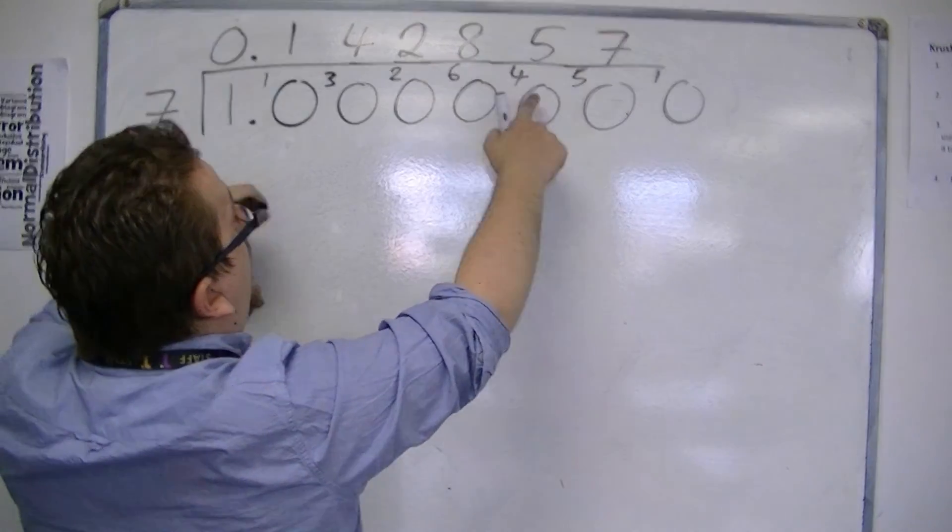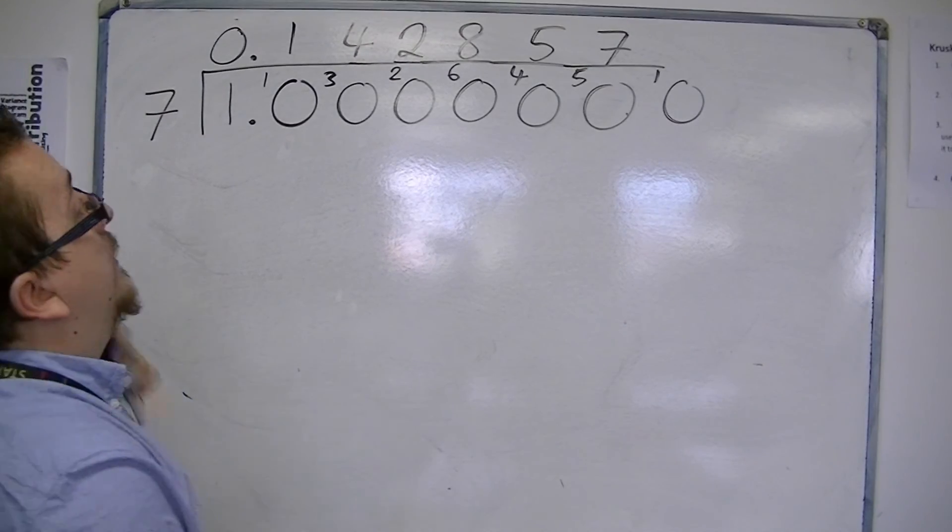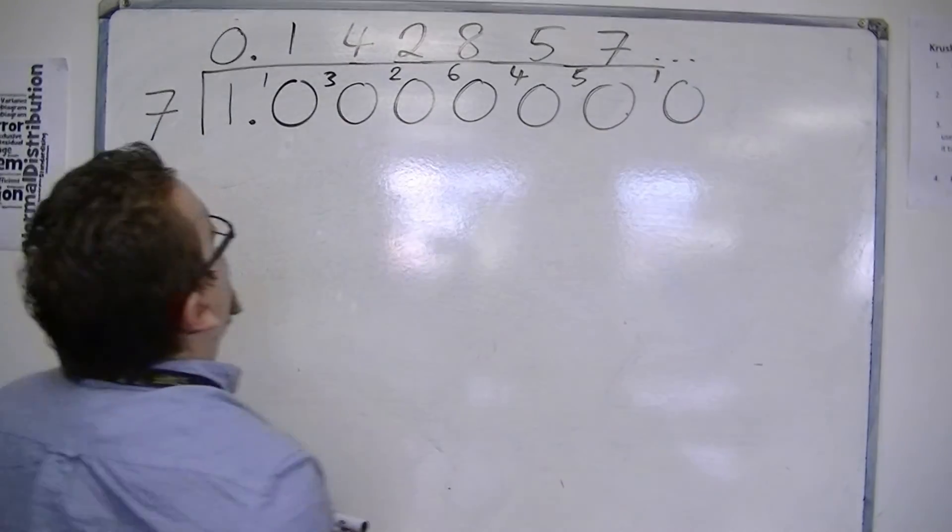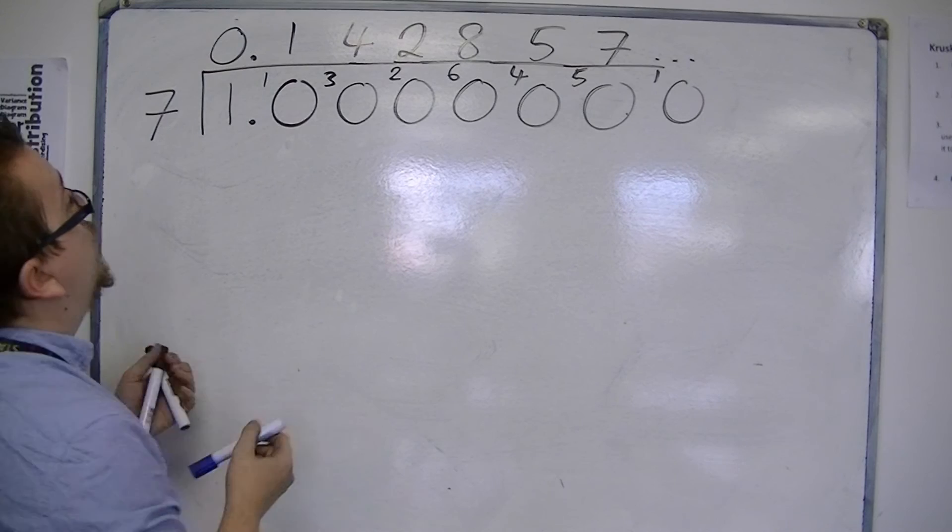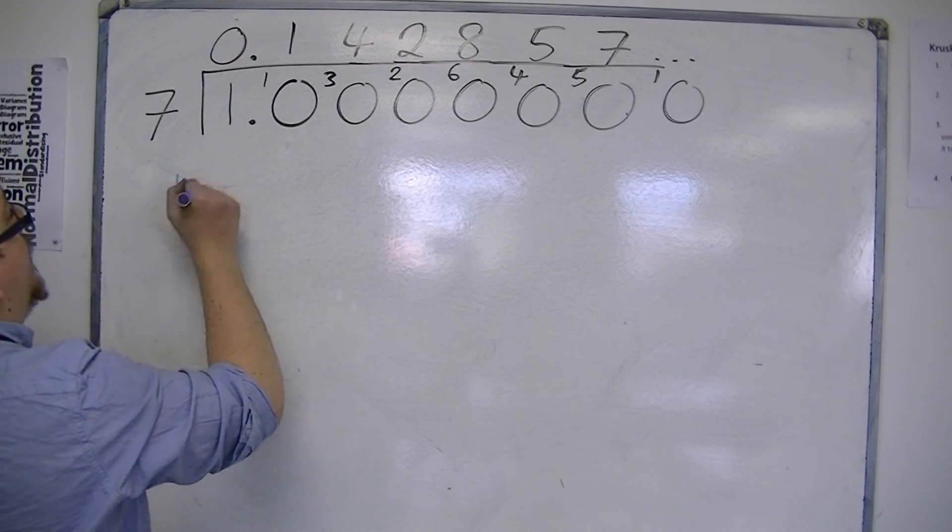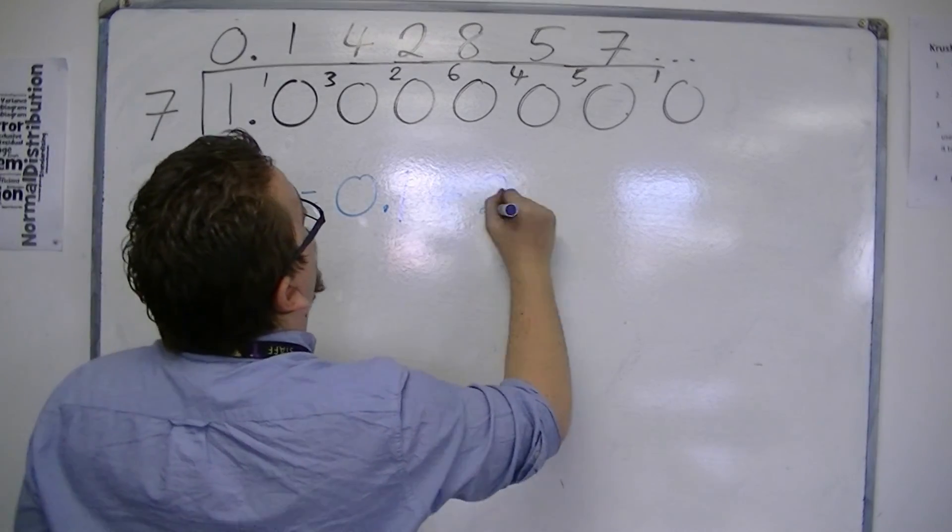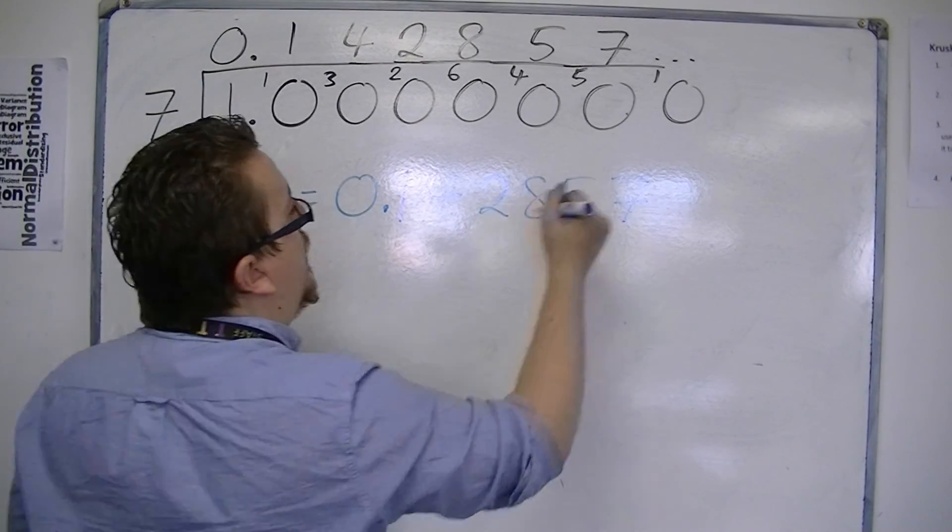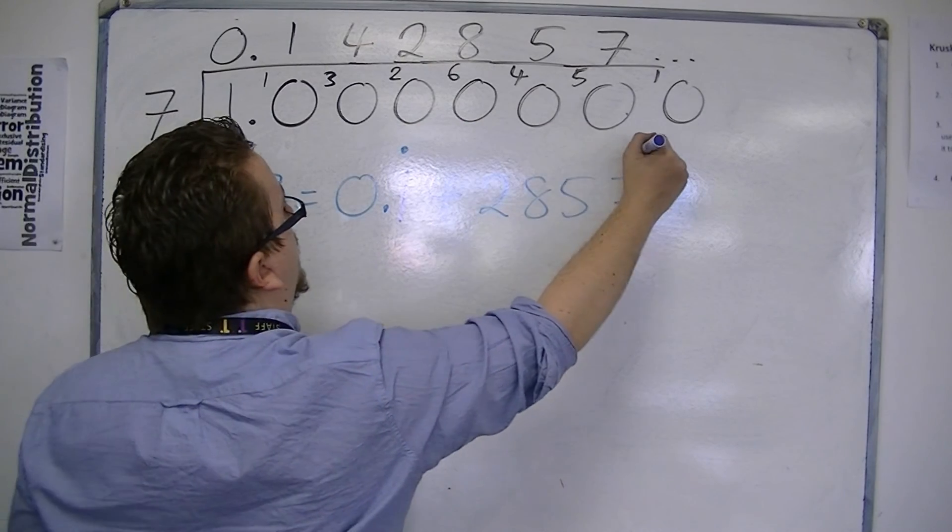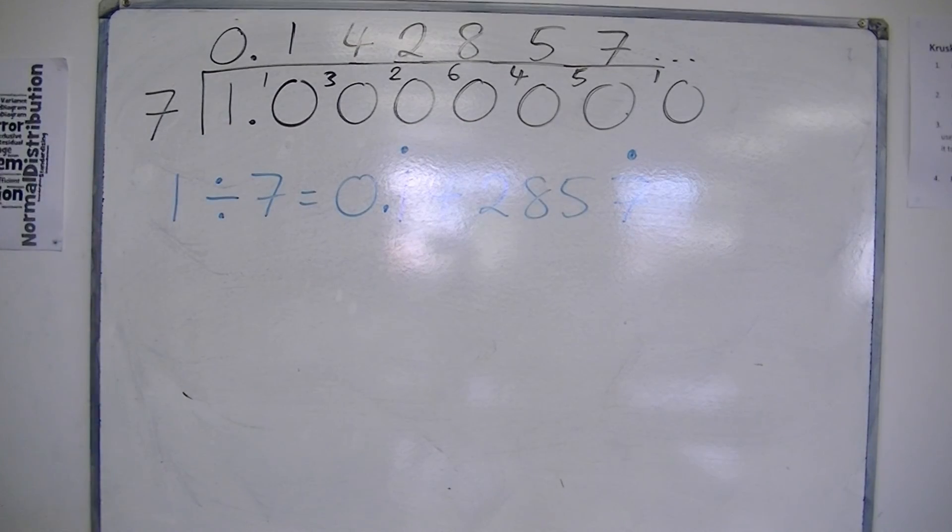So 1, 3, 2, 6, 4, 5 as being the remainders. And so it keeps repeating. It keeps repeating the 1, 4, 2, 8, 5, 7 part over and over again. And this is how we would write it. 1 over 7.